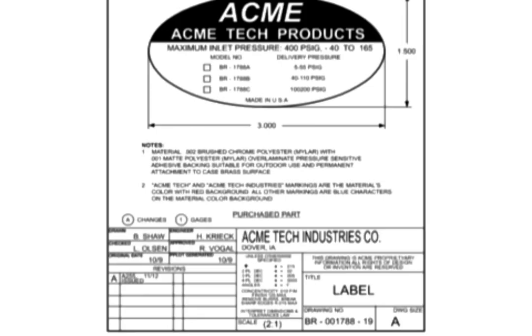Another type of detail drawing is the purchase part or procurement drawing. This type of drawing details all the information required to buy a stock part off the shelf. It typically only shows information useful to the purchaser to detail the performance or configuration of the item required. These characteristics are typically called the form, fit, and function of the part. It's up to the manufacturer to develop detail machine or casting drawings that conform to the purchase part drawing requirements.